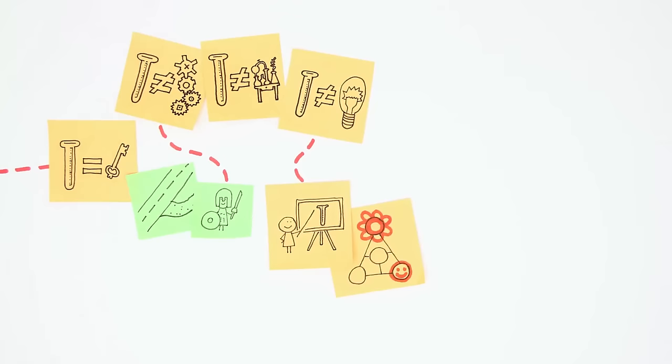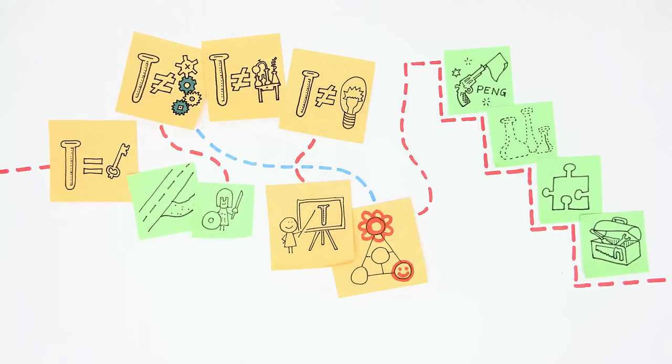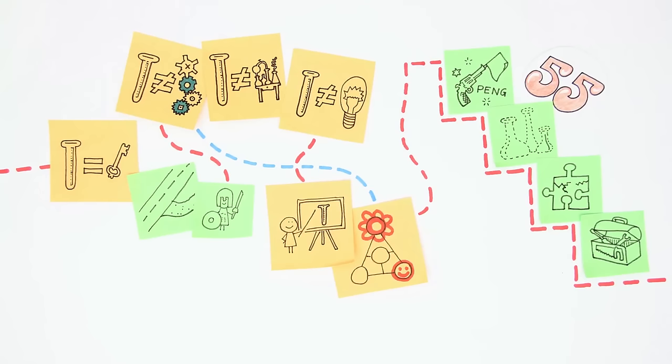This can be done in a structured process of initiation, ideation, integration, and implementation. You analyze your business model, apply the 55 innovation patterns, check for inconsistencies, and start implementing carefully, keeping in mind success factors and pitfalls.